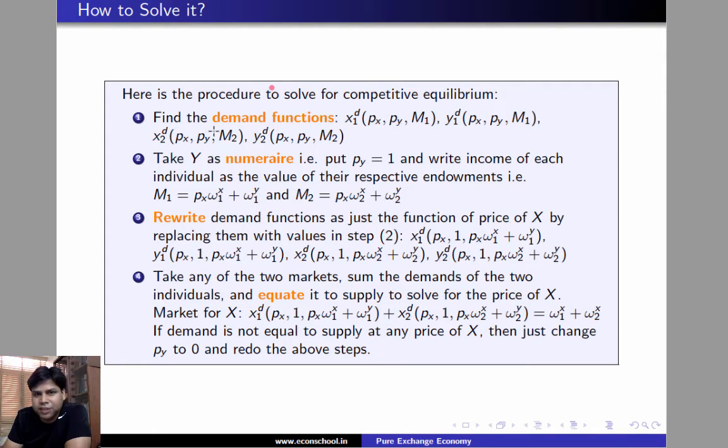So, the first step in the procedure is find the demand functions. Here, M1 denotes the income of individual 1 and M2 denotes the income of individual 2. PX and PY are prices of X and Y respectively. X1D is the demand function of commodity X by individual 1. Y1D is the demand function of commodity Y by individual 1. And similarly, for X2D and Y2D.